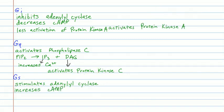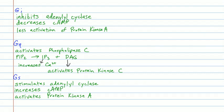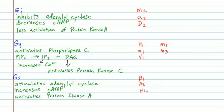IP3 increases calcium; DAG activates protein kinase C. For Gs: S is for stimulate — Gs stimulates adenylyl cyclase, increasing cyclic AMP, which activates protein kinase A. For receptors: Gi uses the mad twos — M2, alpha 2, D2. Gq uses 'cutesies have one M&M' — H1, alpha 1, V1, M1, M3. Gs gets all the leftovers: beta 1, beta 2, H2, V2, D1.